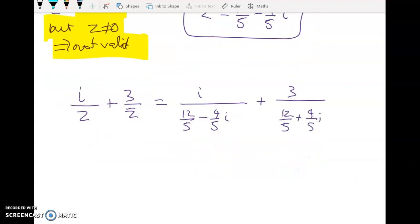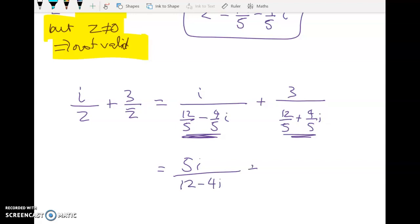Okay, so cleaning this up, some good algebra practice. We've got a common denominator here of 5 and 5. So we're dividing by fraction. We end up with 5i over 12 minus 4i plus 15 over 12 plus 4i.